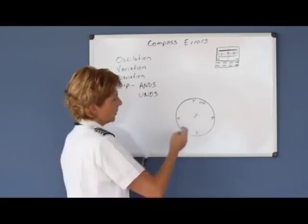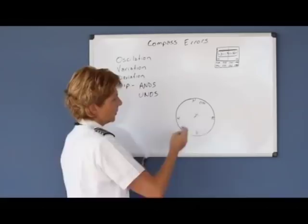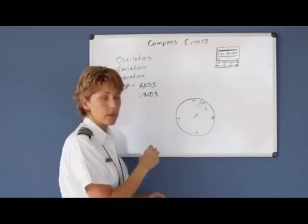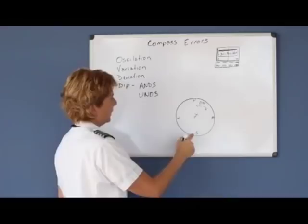So once you begin your turn to the south, you start your turn, but the compass actually goes backwards and then follows behind you. So what happens when we're trying to roll out on our southerly heading is we have to overshoot what we actually see in the compass glass.